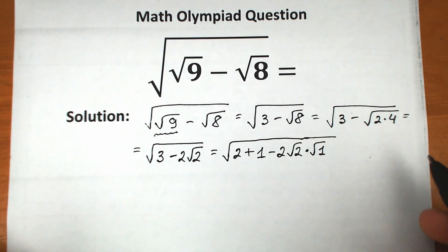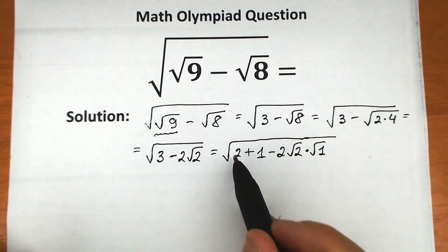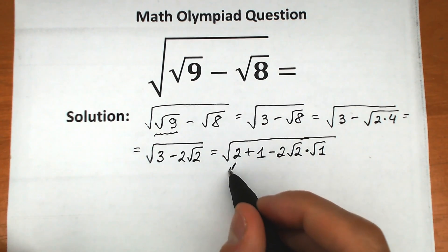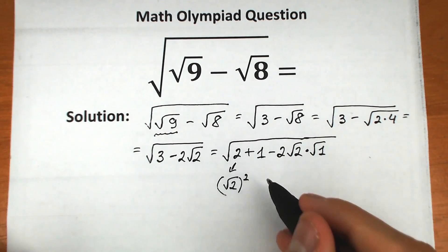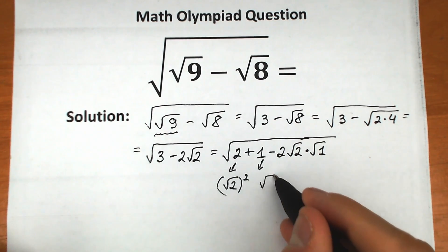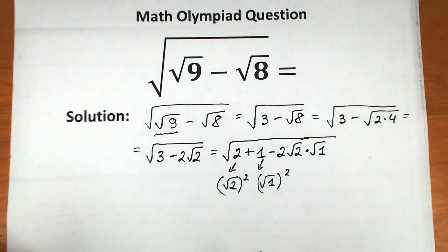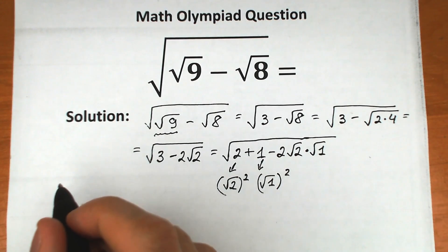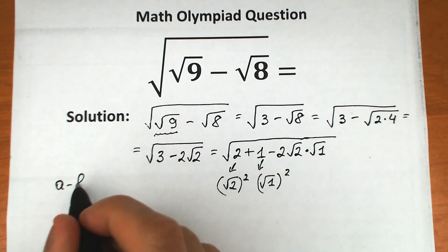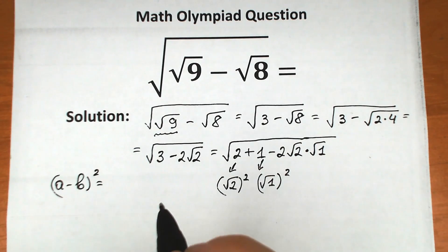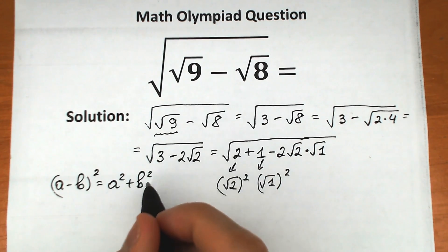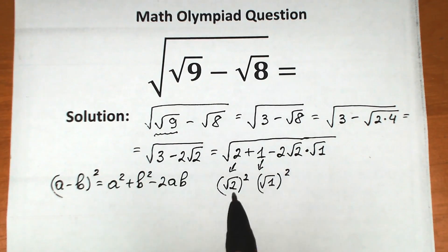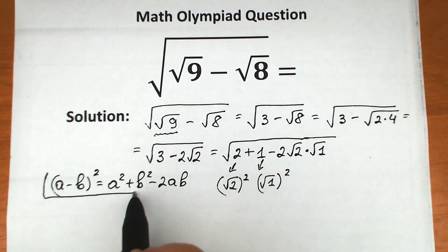If we write 2 as the square of square root of 2, and 1 as the square of square root of 1, nothing changes — these are the same values. Now let's remember the formula: a minus b, squared, equals a squared plus b squared minus 2ab. This is a really important formula for this step.